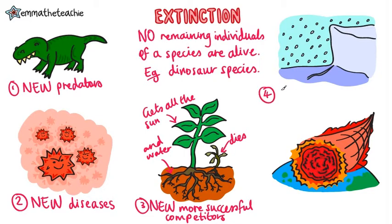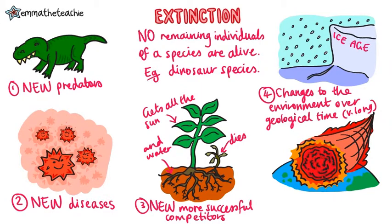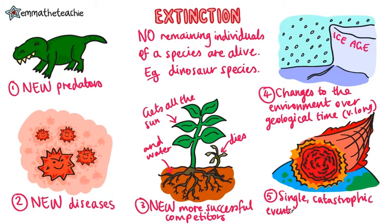There can be changes to the environment over geological time — a really long period, like millions and billions of years. For example, an ice age could cause the extinction of species that live in really warm climates. And finally, single catastrophic events, like an asteroid collision or a volcanic eruption, could cause mass extinction. This is one theory for how dinosaurs died.